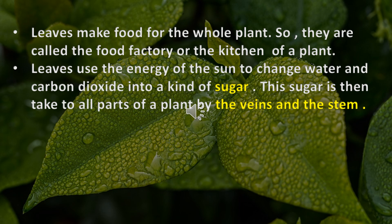The leaves make food for the whole plant, so they are called the food factory or the kitchen of a plant. Leaves use the energy of the sun to change water and carbon dioxide into a kind of sugar. This sugar is then taken to all parts of a plant by the veins and the stem.